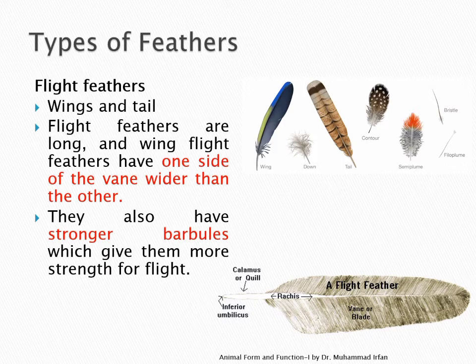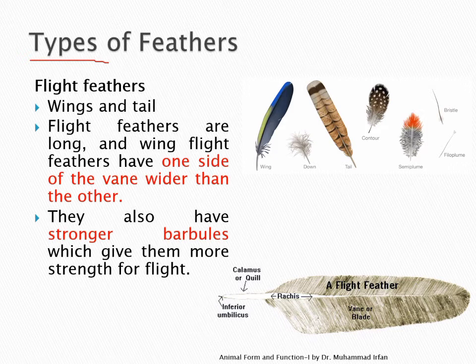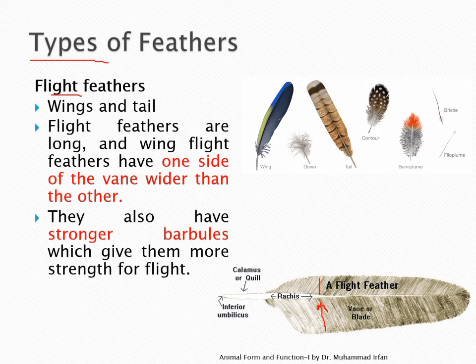Feathers can be classified on the basis of structure, function, and location into types such as flight feathers, contour feathers, down feathers, semi-plumes, bristle feathers, and filoplumes. Flight feathers are present on wings or tails. They are long, with one side of the vane broader than the other, and have stronger barbules to provide the ability to fly.